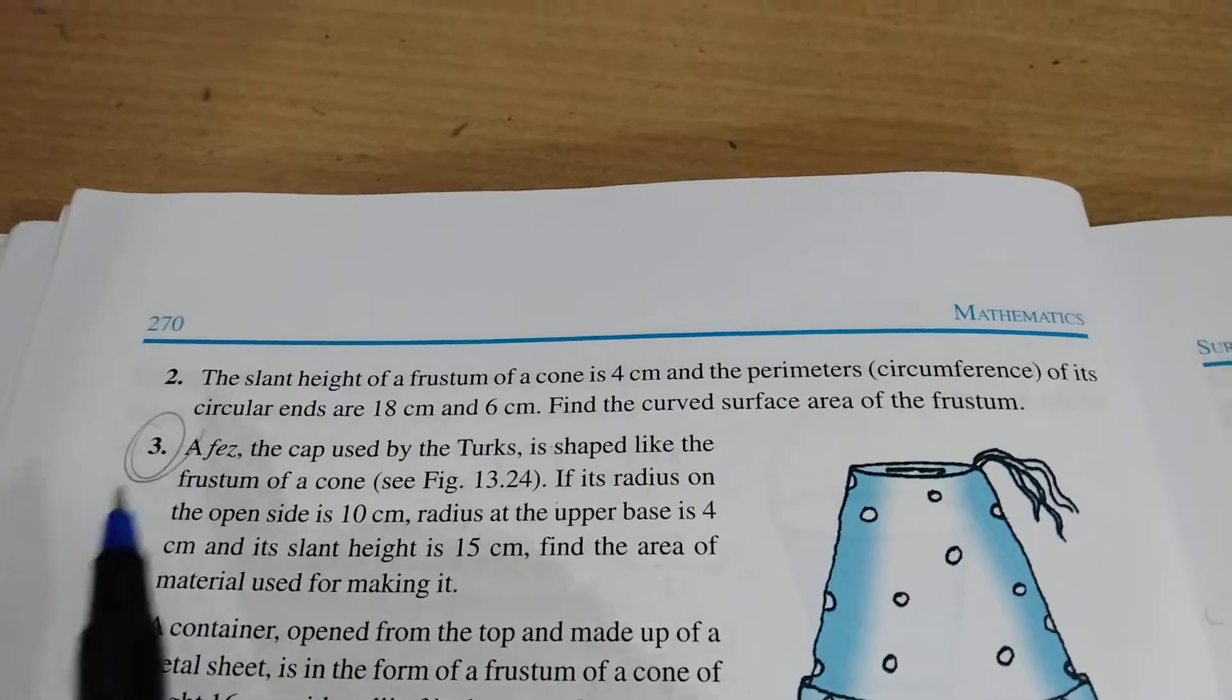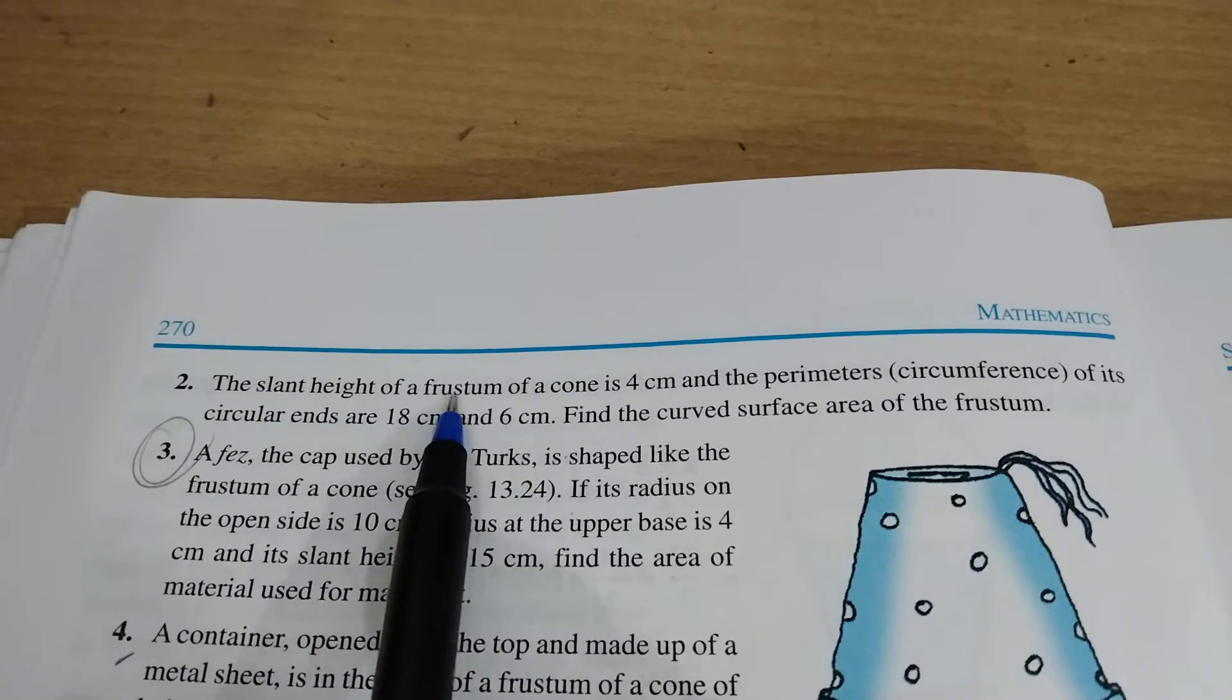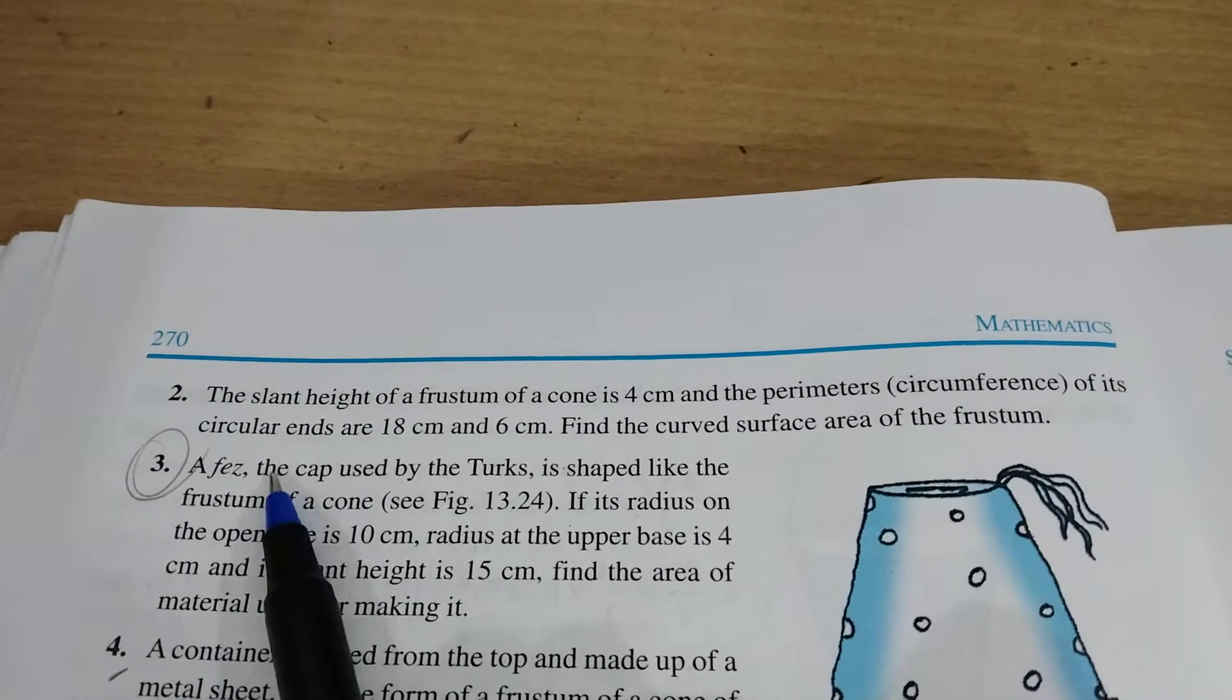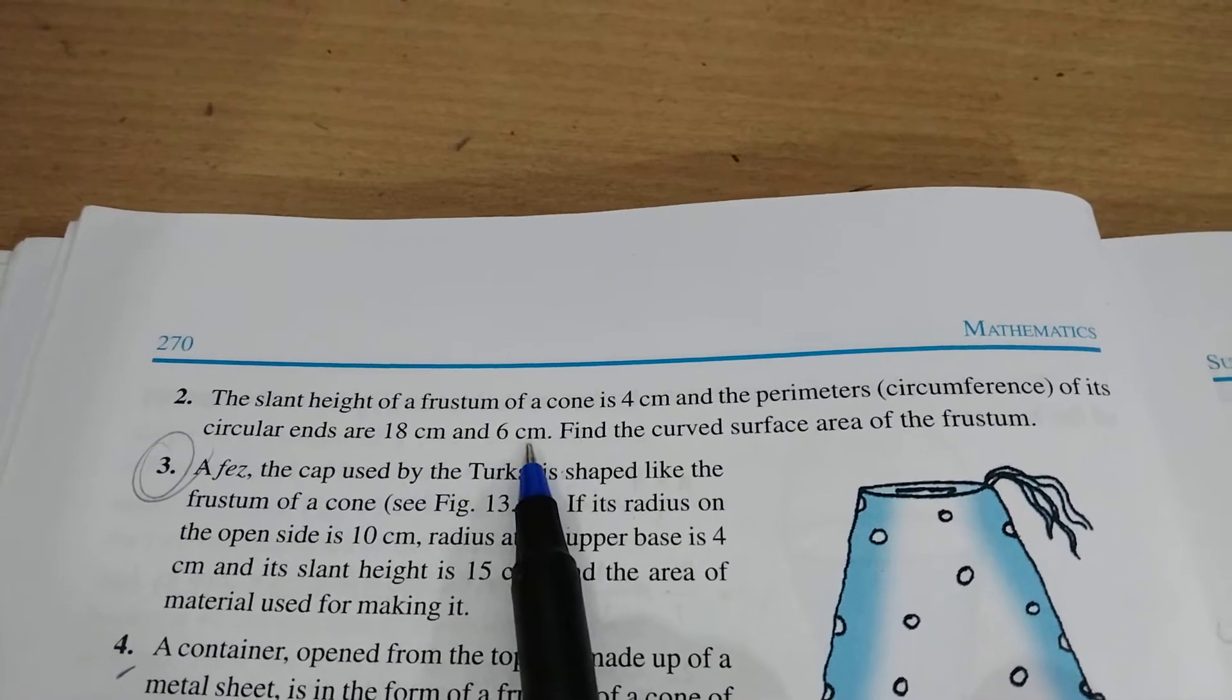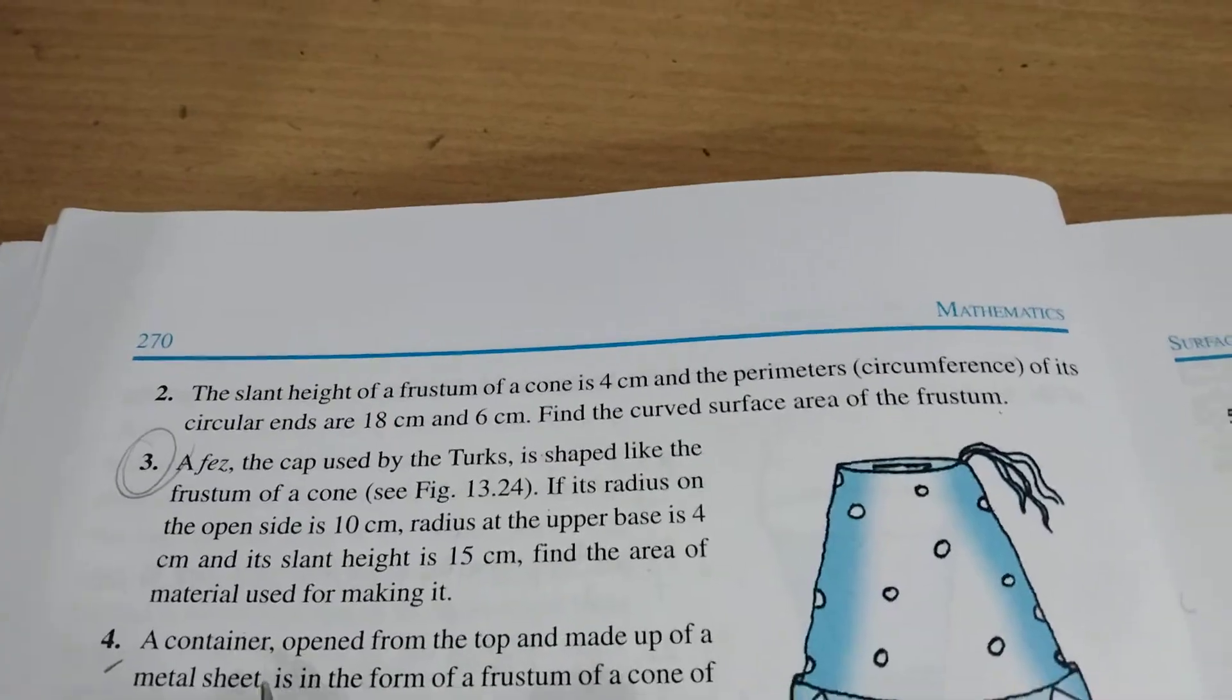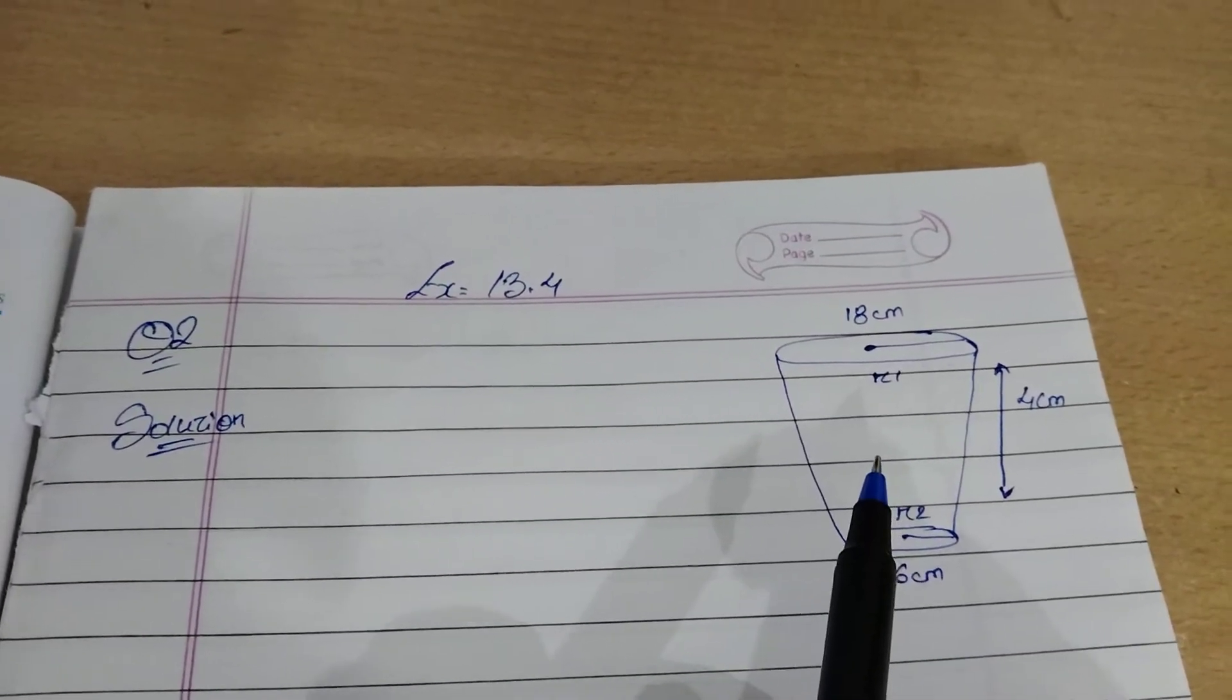Now we are going to do 13.4 question number two. The question is: the slant height of a frustum of a cone is 4 cm and the perimeter (circumference) of its circular ends are 18 cm and 6 cm. Find the curved surface area of the frustum. Let's begin. As you remember how we did for 13.4 question number one, we are going to do it similarly.